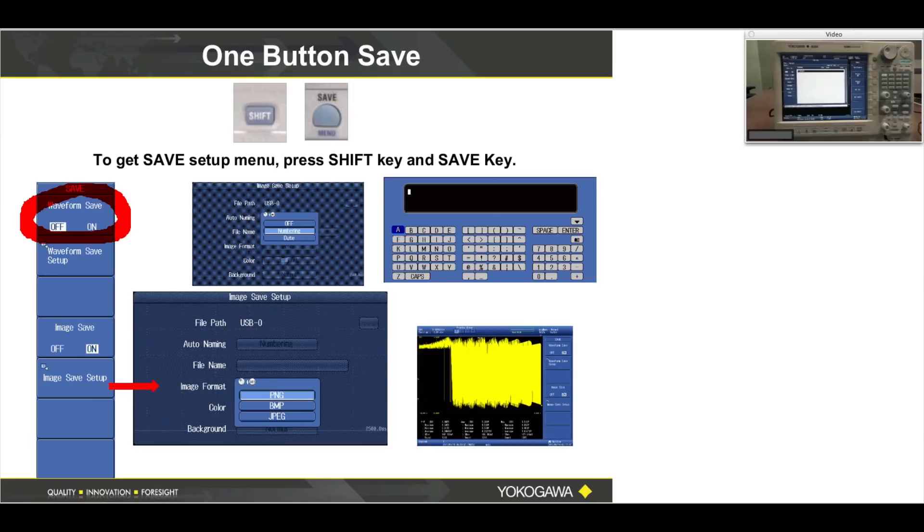Have you inserted the USB thumb drive into the left end of the instrument here where my finger is? Insert the drive there. Let's start again at the top. Press Shift, Save. Soft menu button number two, Waveform Save Setup. Press Set. Adjust this knob with my fingertip here until you highlight USB. Press Set.